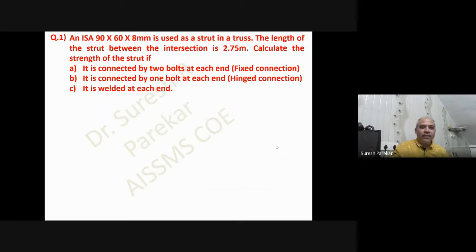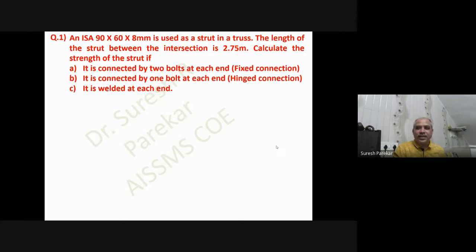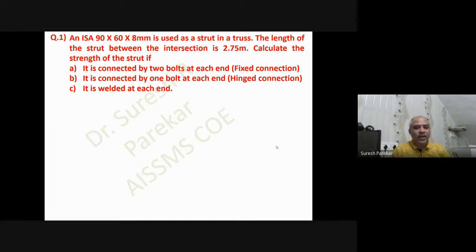We have an ISA 1968 mm used as a strut in a truss. The length of the strut between intersections is 2.75 meters. We need to calculate the strength of the strut if it is connected by two bolts at each end, which is a fixed connection.